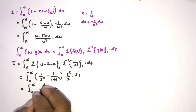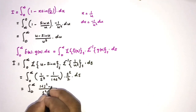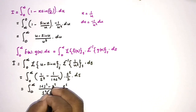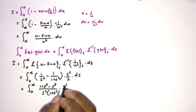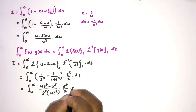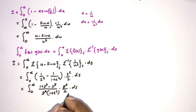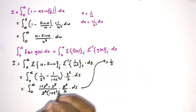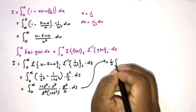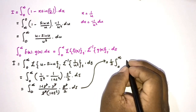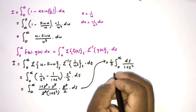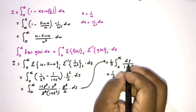Simplifying: using the common denominator s squared times (1 plus s squared), we get (1 plus s squared minus s squared) in the numerator, so the s squared terms cancel. This leaves one half times the integral from 0 to infinity of ds over (1 plus s squared).